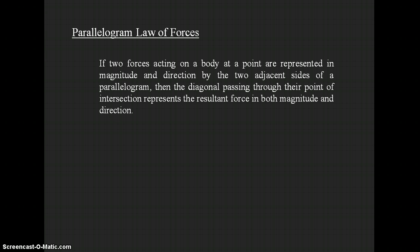So we are saying: if two forces acting on a body at a point can be represented by the two adjacent sides of a parallelogram, then the resultant of those two forces will be the diagonal of the parallelogram passing through the intersecting point of the two adjacent sides. Here, assume P is a force acting in the horizontal direction and Q is another force acting at a certain angle with force P. Point O is the intersecting point between the two adjacent sides.